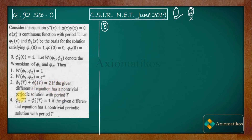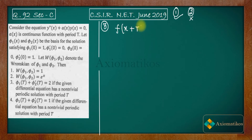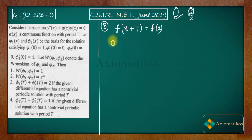The problem states that the given differential equation has a non-trivial periodic solution with period t. By definition, a function f is periodic with period t if f(x + t) = f(x) for all x. Since φ₁ and φ₂ both have period t, we have φ₁(x + t) = φ₁(x) for all x in the domain.